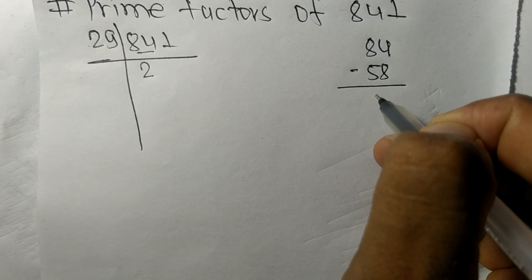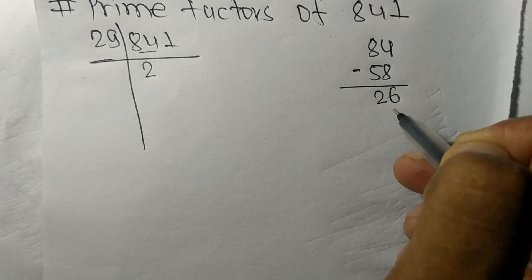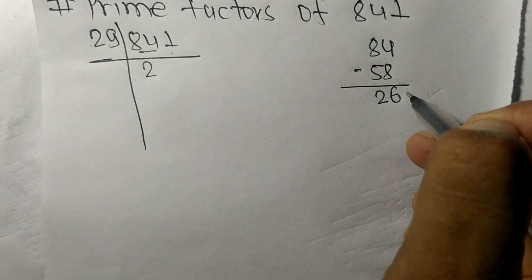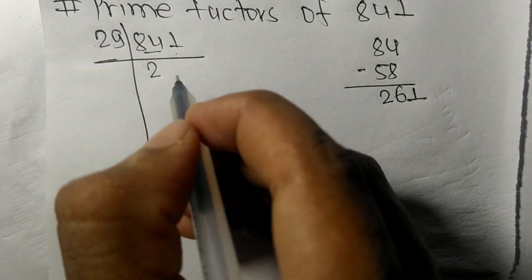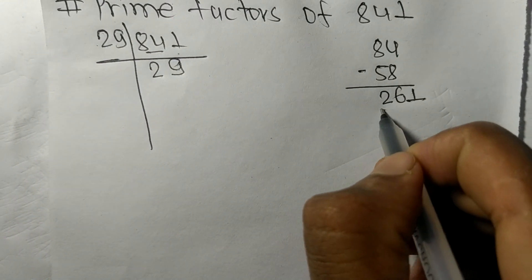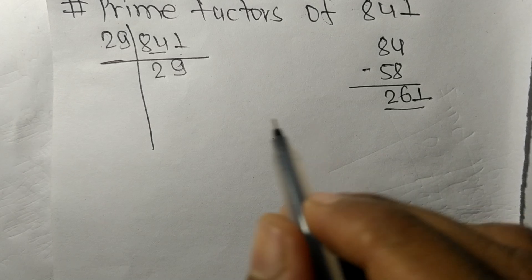And this one it became 261. So 29 times 9 means it is 261, meaning 841 on dividing with 29 we got 29.